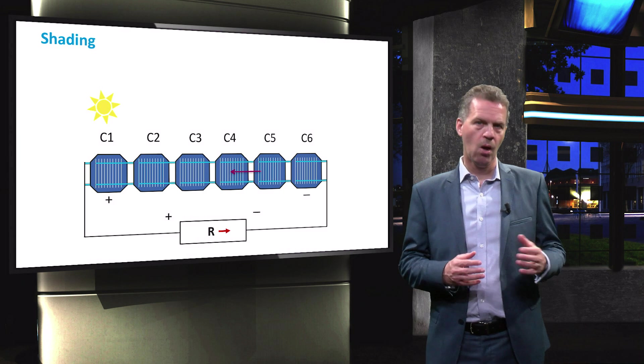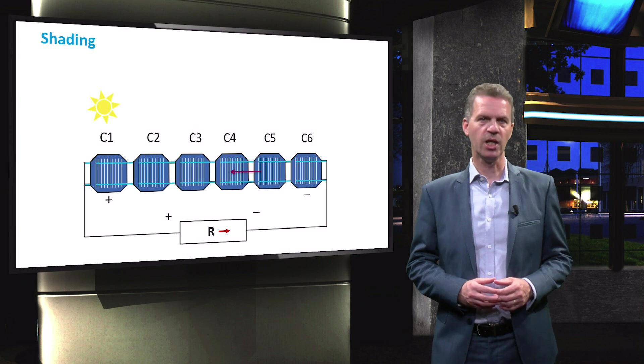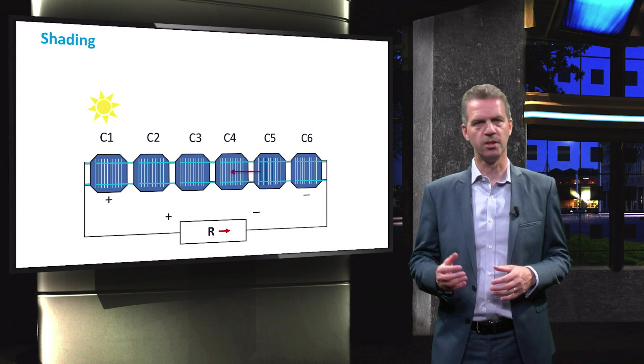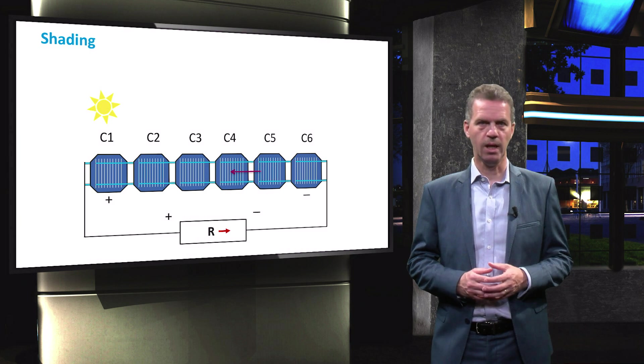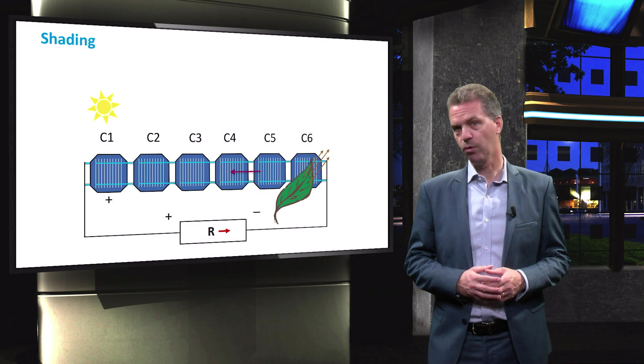We will now shortly address a problem that comes up when multiple cells are connected in a string to form a PV module. When a module is installed in a PV system, it can be partially shaded by a nearby object such as a tree, a chimney or a neighbouring building. Shading can also be caused by a leaf that has fallen from a tree.